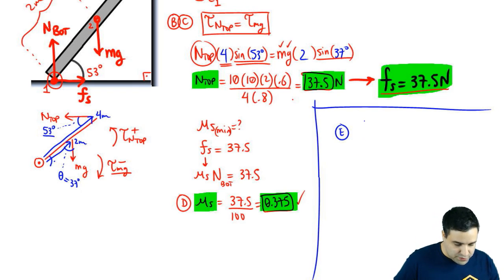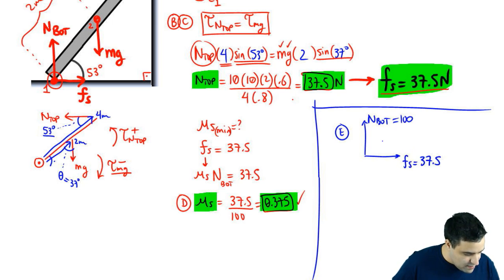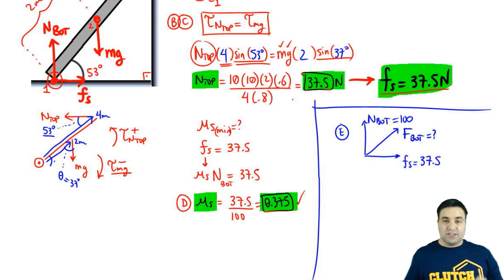So part E, total contact force, you're going to have N bottom, which is 100. You're going to have friction static 37.5. And then the total contact force, I'm going to call this F bottom, is what we're looking for. This is just basic vector addition. We're going to use the Pythagorean theorem to combine these two.